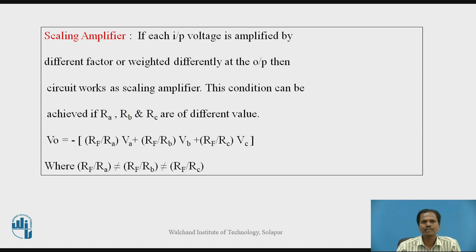Now let us see how this same circuit can work as a scaling amplifier. If each input voltage is amplified by different factors — weighted differently at the output — then the circuit works as a scaling amplifier. This is achieved by selecting input resistors R-A, R-B and R-C of different values. The output voltage is V-O equals minus [R-F/R-A × V-A + R-F/R-B × V-B + R-F/R-C × V-C], where R-F/R-A ≠ R-F/R-B ≠ R-F/R-C. Each input is amplified by a different factor, so each input is weighted differently at the output.